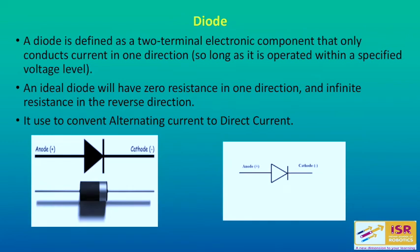Next is diode. A diode is also a two-terminal electronic component, but it conducts current in only one direction. That means it gives infinite resistance in one direction and zero resistance in the other direction. Usually we use a diode to convert AC current into direct current. In a diode we have two terminals: anode, which is the positive terminal, and cathode, which is the negative terminal.